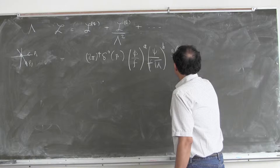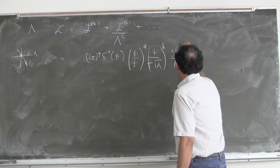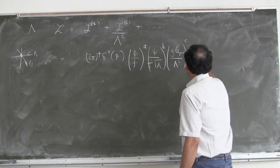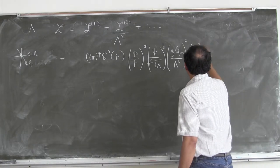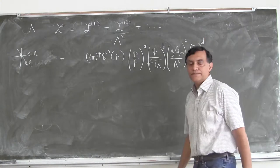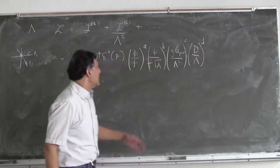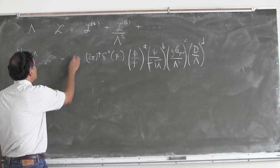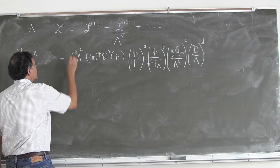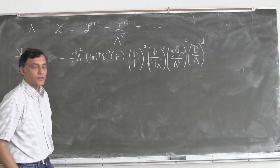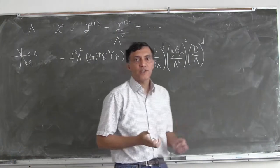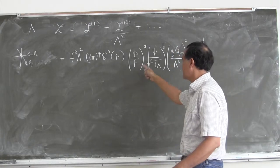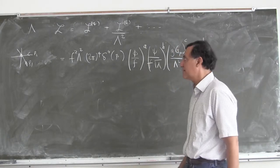Gauge fields come in in terms of field strength tensors to the power c, and covariant derivatives to the power d. Because the term has dimension 4, I put an overall f-squared lambda-squared out in front to make up for the dimensions. I'll argue this is a self-consistent power counting, and there has to be a specific relation between f and lambda.